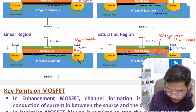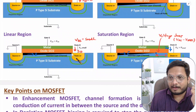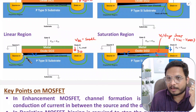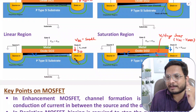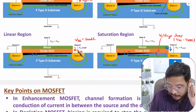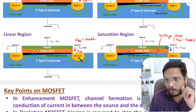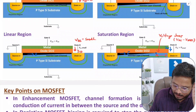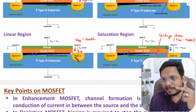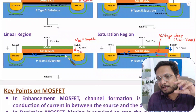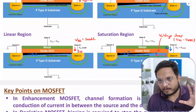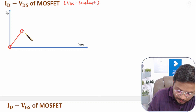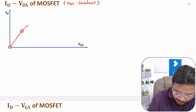As you further increase VDS voltage, the width of the channel at the drain side becomes lower. As this width decreases further, the increase in ID current is no longer linear. After some VDS voltage, the increase in ID gets slowed down. In the characteristics, after the linear point, ID will increase but it will not be linear.